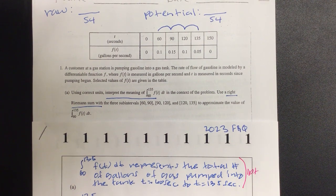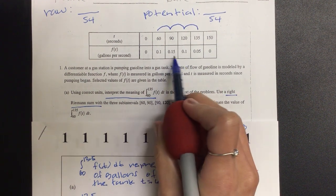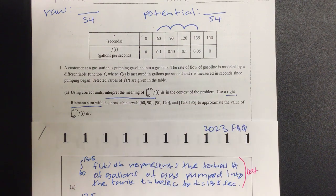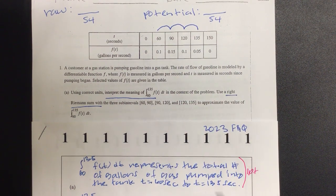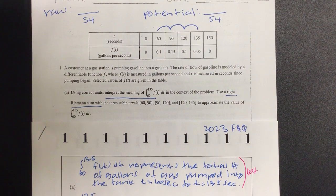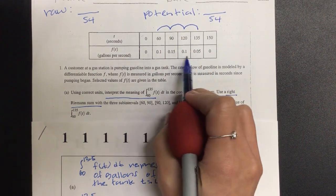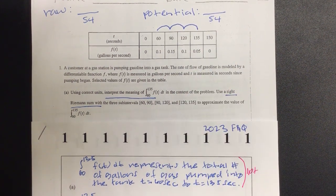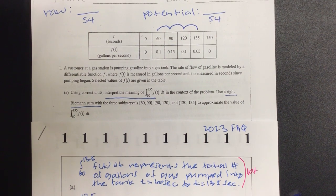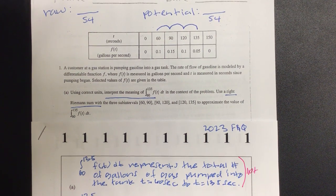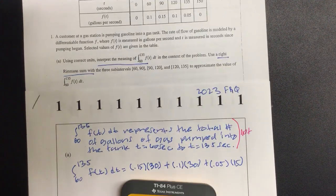So 0.15 was on the right of the first subinterval. And then the difference between the X's are what? 30. And then the next one, what's the right one on this one next? 0.1. The difference of the X's again? 30. Very good. And then the right Riemann sum, the right one is? 0.05. And then the difference on that one is different. 15. And it is calculator portion. Type it in.